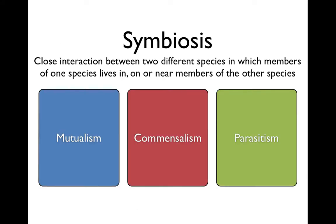Next is symbiosis. Symbiosis is a close interaction between two different species where members of one species live in, on, or near members of another species. There are three types of symbiosis — this is the second major category after predation and competition. The three types are mutualism, commensalism, and parasitism.